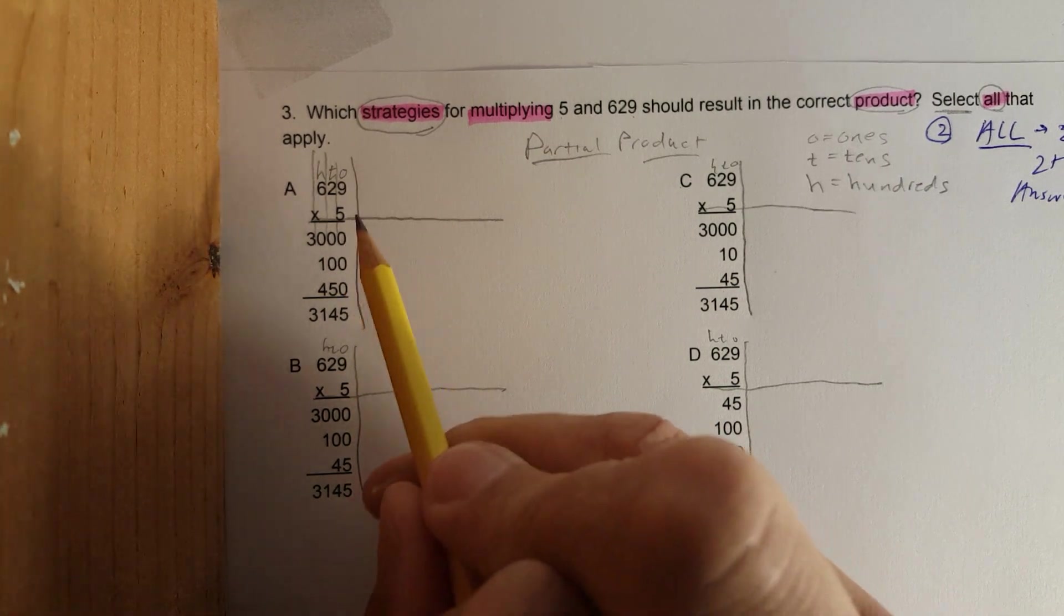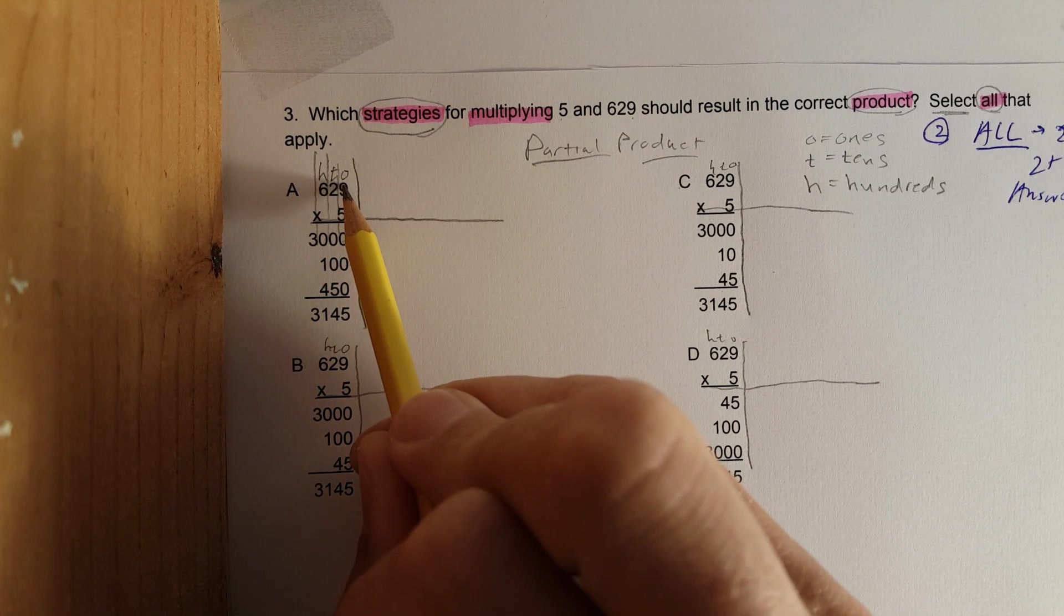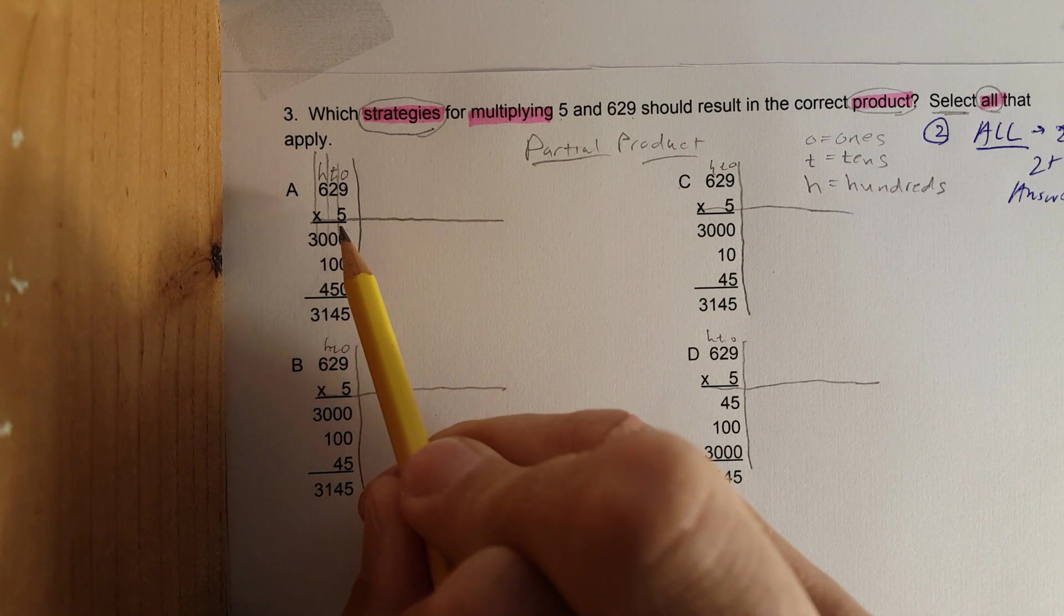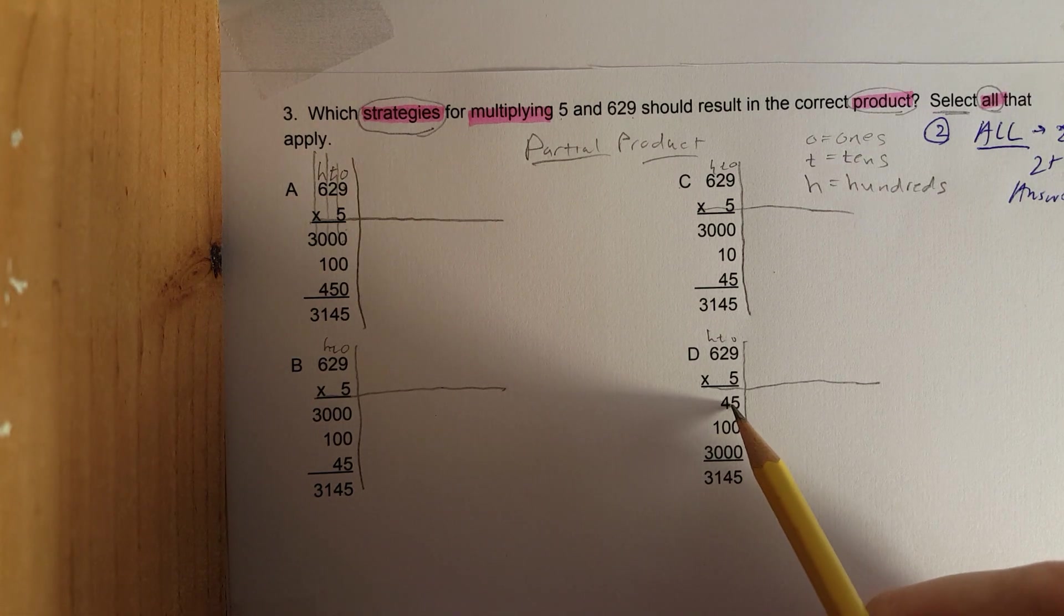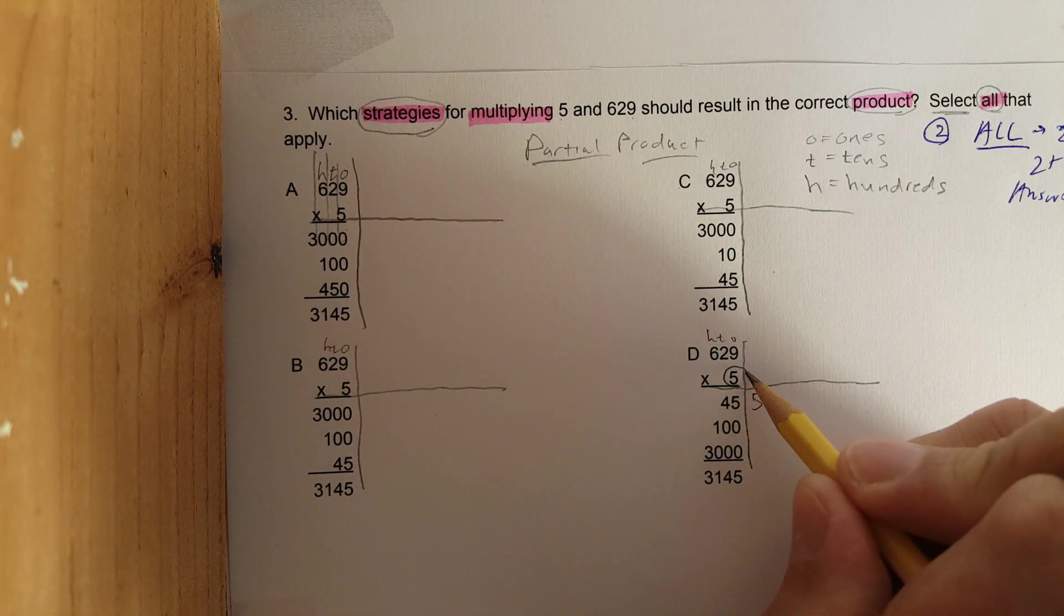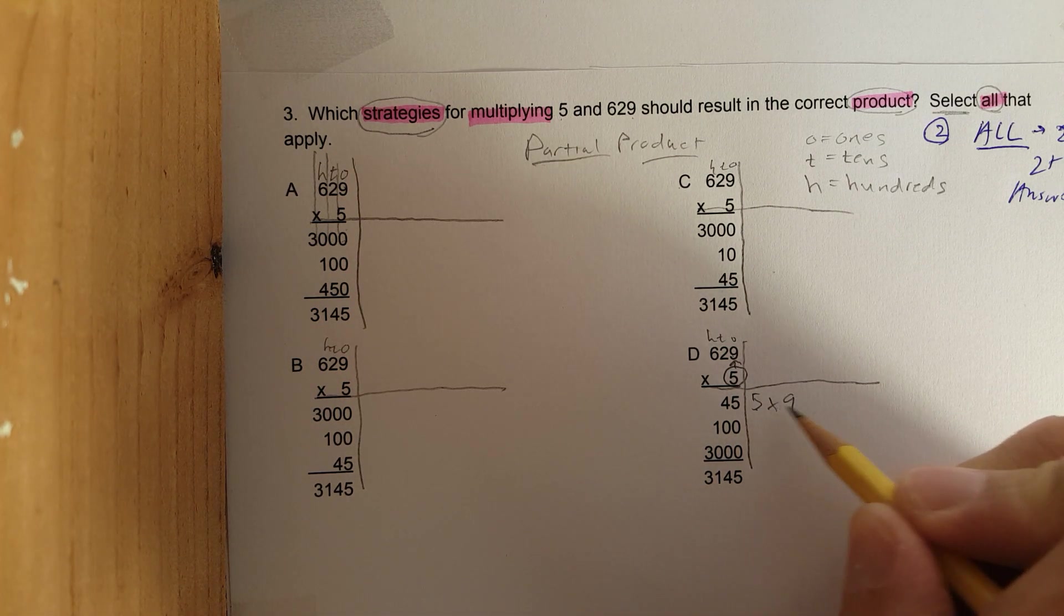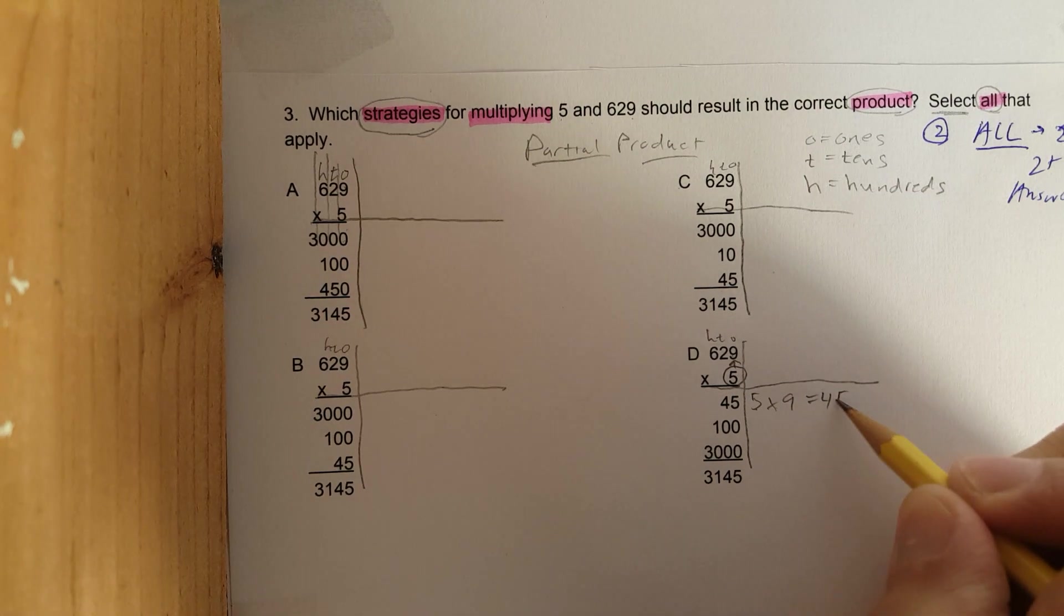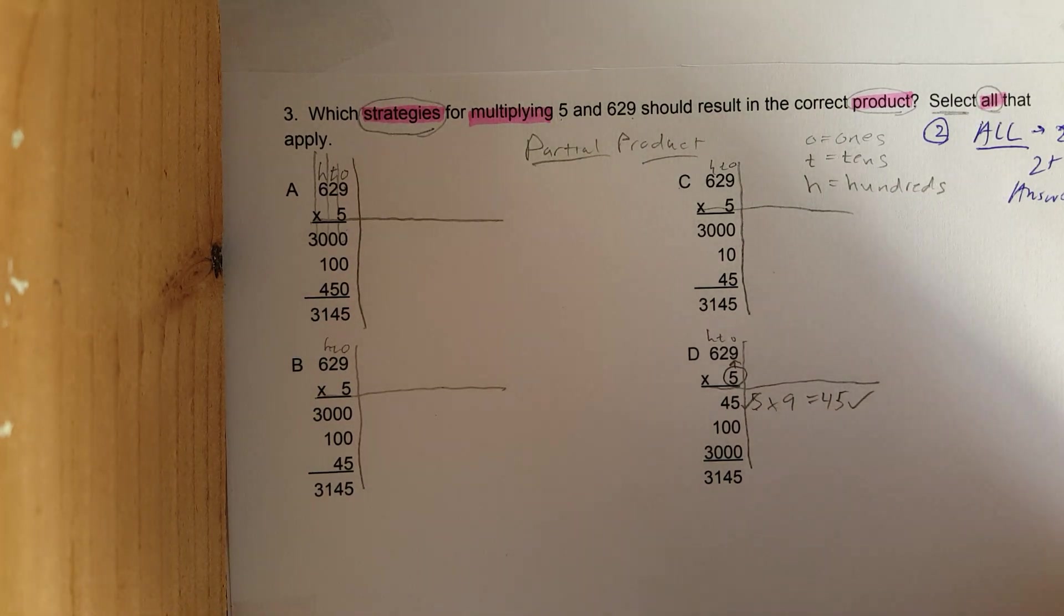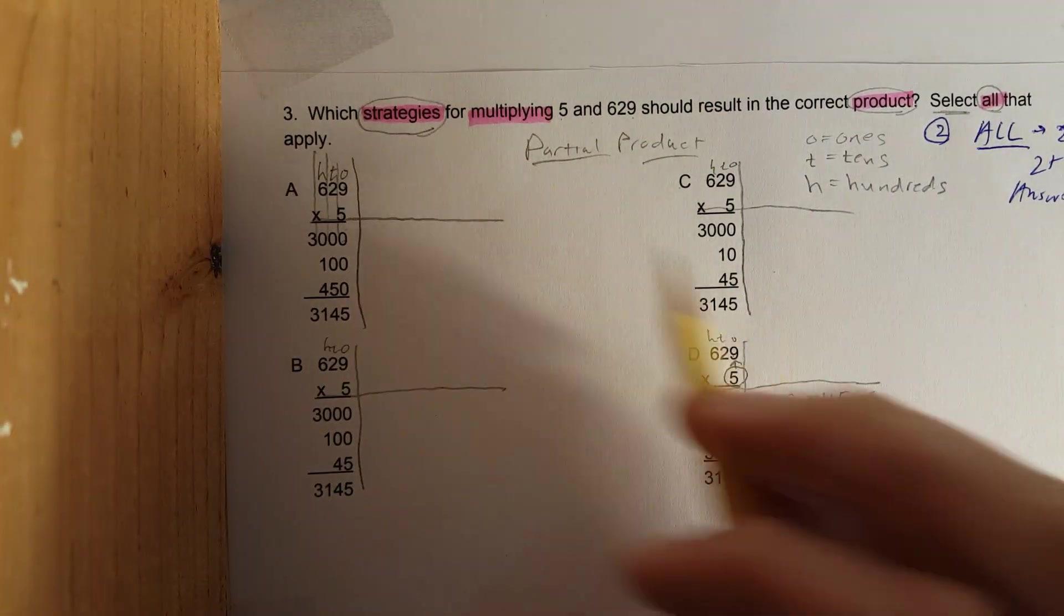I drew a line straight out from the bottom and then a line on the side. Most of the time when you do partial product, you start in the ones place and multiply ones times ones. For instance, I'm going to come down to this one - this is the same thing as 5 times 9.